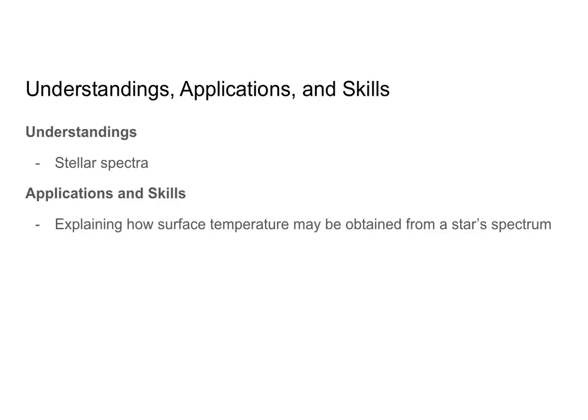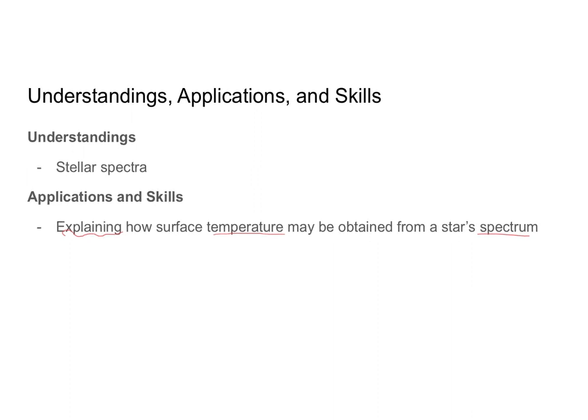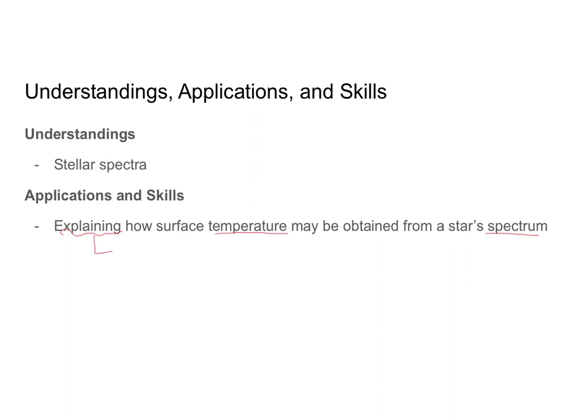So for IB, for understanding applications and skills, by the end of the video you should be able to understand stellar spectra. And just so you know, spectra is the plural for spectrum. And for your obligations and skills, you should be able to explain how surface temperature may be obtained from a star's spectrum. So we're explaining how temperature is obtained from a spectrum. And I should hopefully not need to remind you for IB, when we talk about explaining, that is both qualitative and quantitative. So with that, let's go ahead and get started.